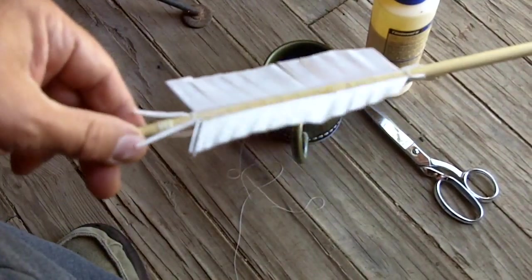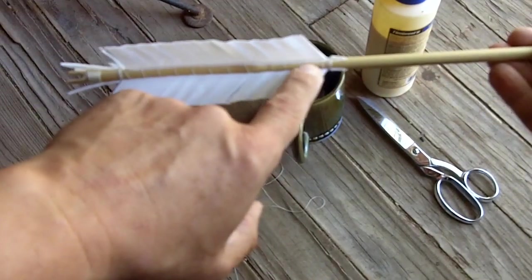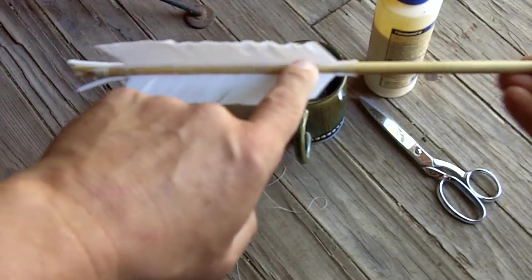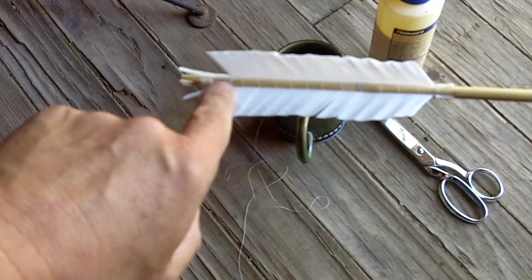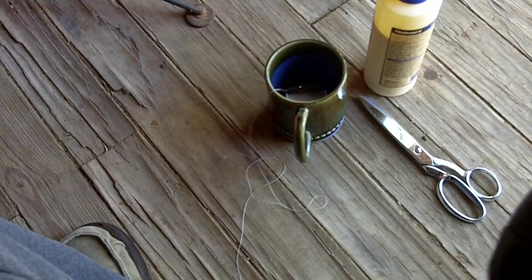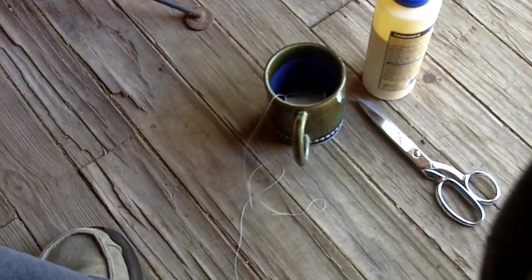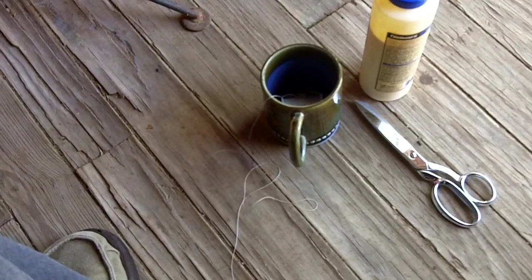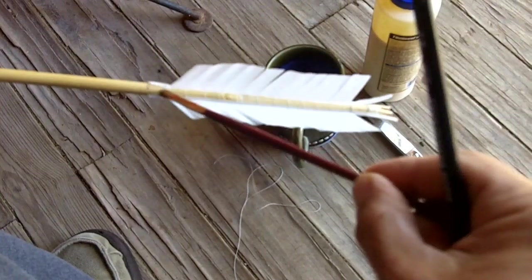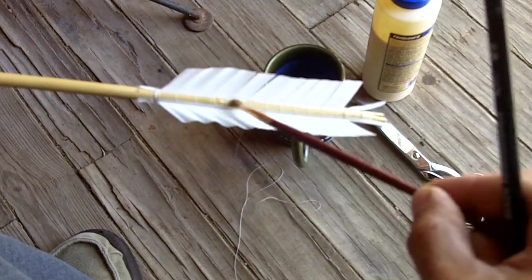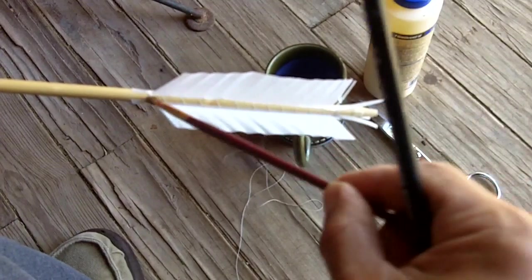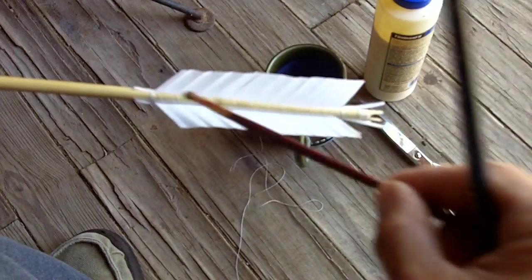And after I glue these down, I'm going to run a bead of glue along the thread and along the edge of that vein, and on all the wrapping. I'll just brush on the glue with a paintbrush. I just brush on the glue right over the top of the thread and right up on the veins, and on all the wrapping.